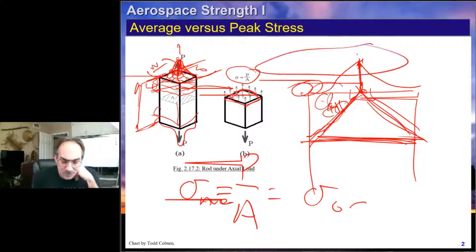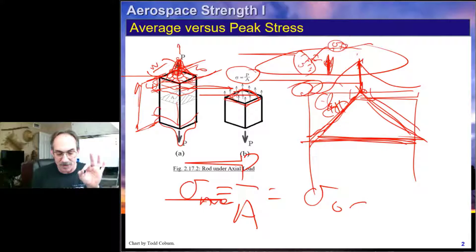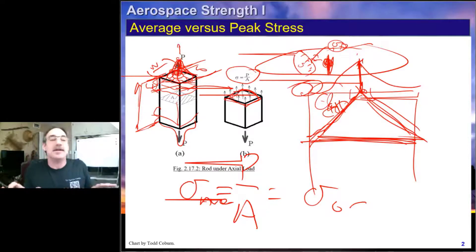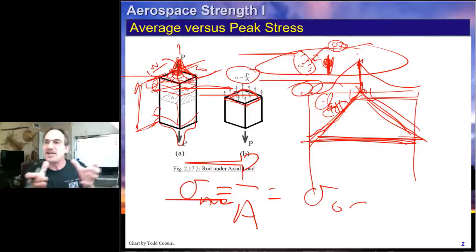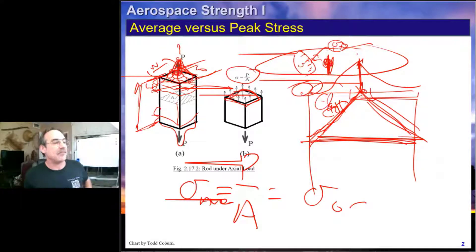The gross area means we're not accounting for any proximity to load or changes in cross-section. The far field stress is the stress if we're not accounting for any local features. With those basic ideas, we're ready to take another step forward. If we're near the load, we see significant peaking; far enough away from the ends, we have basically P over A — so stresses near the load are more than P over A, and far-field stresses average out to P over A.